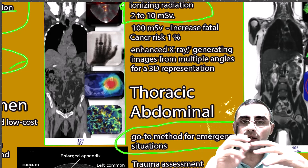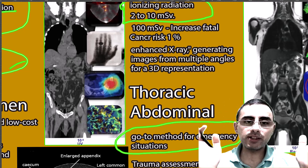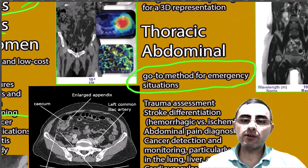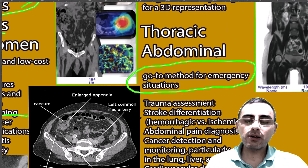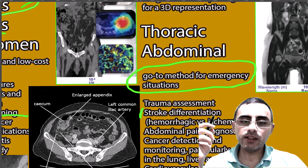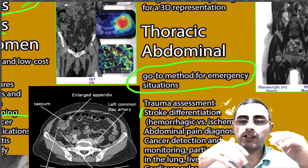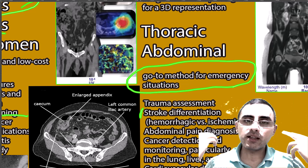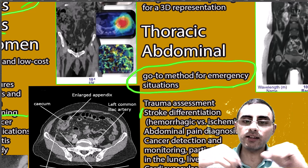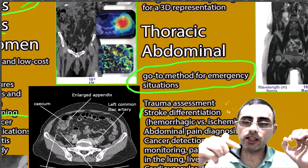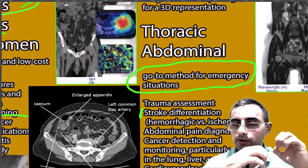CT scan is also used for stroke differentiation. When a person has a stroke, we need to quickly determine if it is hemorrhagic or ischemic, and CT scan is the important method here because it is fast and can make that differentiation.